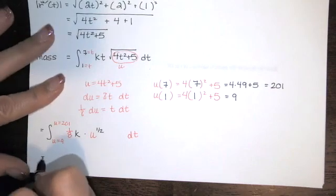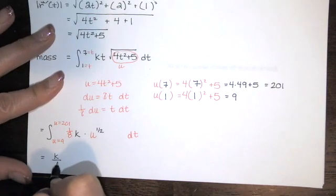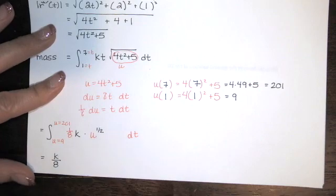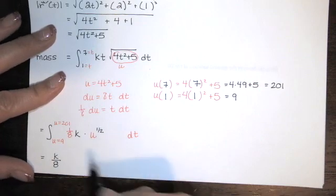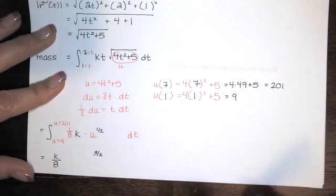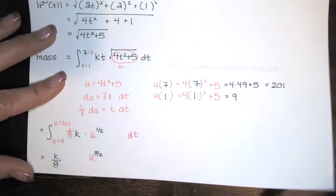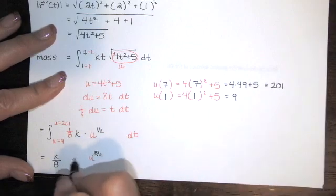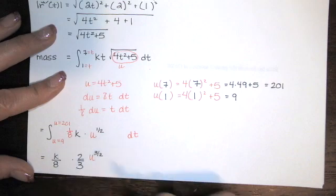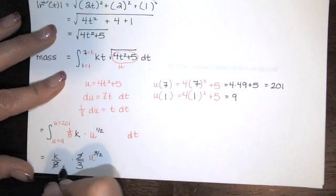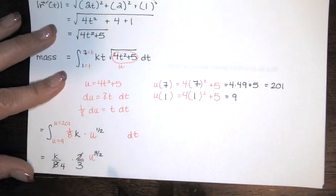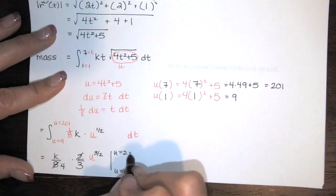All right. So now we've got this K over 8, which I'll just bring outside. And we can take the antiderivative of this using the power rule. Add 1 to the exponent. 1 plus 1/2 is 3 halves. And then we divide by the new exponent. Dividing by 3 halves is the same as multiplying by 2 thirds. 2 goes into 8 four times. Then we'll evaluate this from U equals 9 to U equals 201.